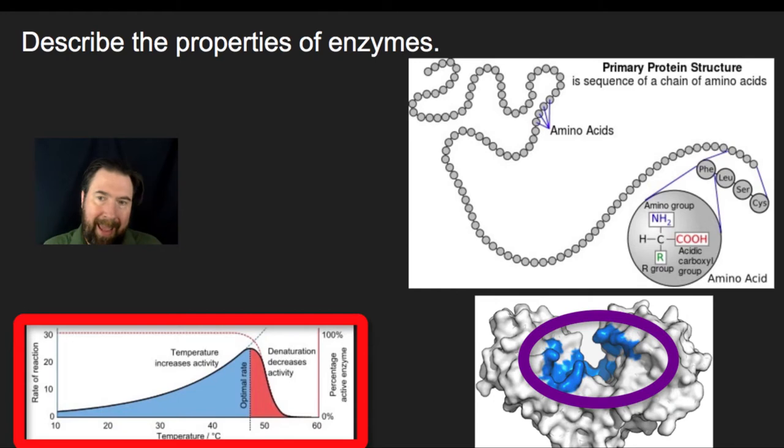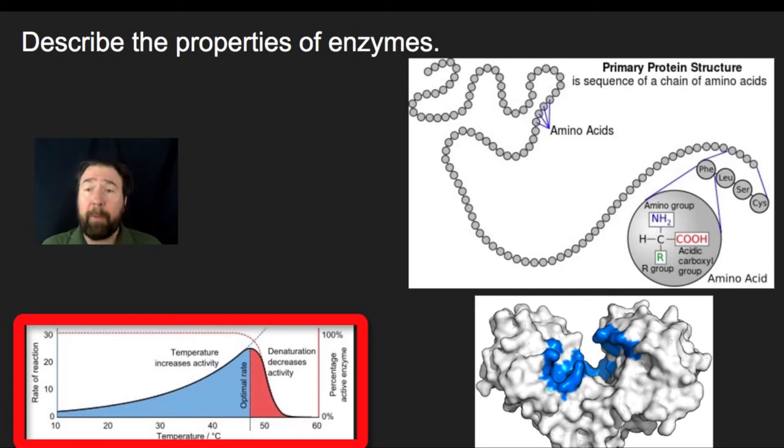So fewer collisions between the active site, the area highlighted here in blue on this particular molecule, and the specific substrate. At lower temperatures, there are fewer collisions, fewer interactions, less activity. As you warm the temperature up, the kinetic energy increases and you'll see an increase in activity. That activity only increases up to a certain point, because at some point there will be thermal stress on the protein, and the protein will start to denature or lose its shape, and it's going to lose its activity.